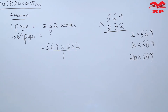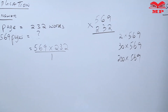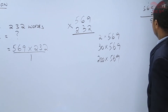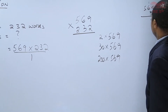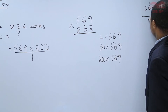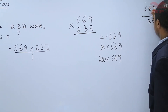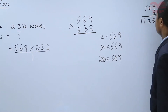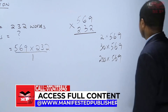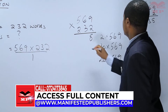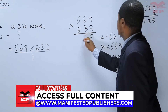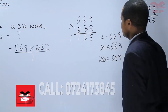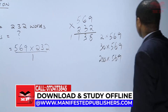569 times 2: 9 times 2 is 18, write 8, carry 1. 6 times 2 is 12 plus 1, which is 13, carry 1. 5 times 2 is 10 plus 1, which is 11. So we write: 8 in the ones place, 3, then 1 and 1.